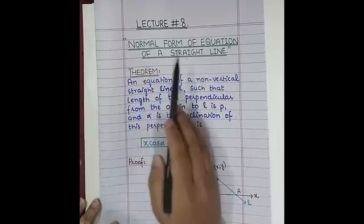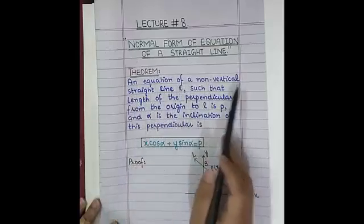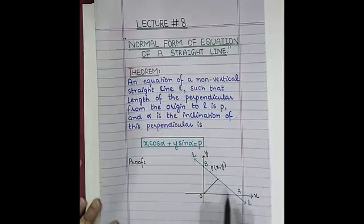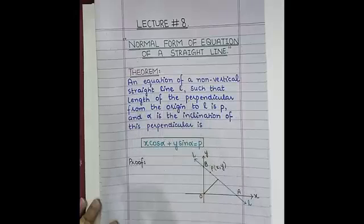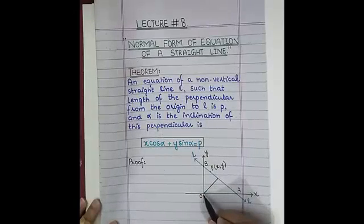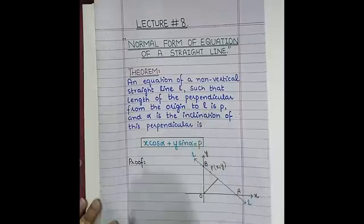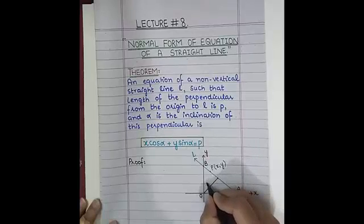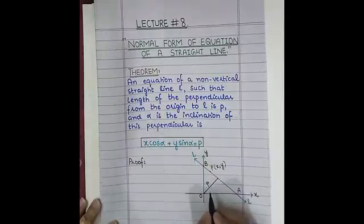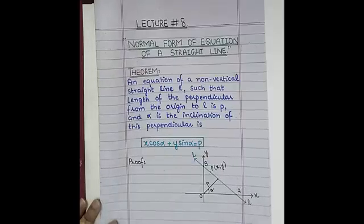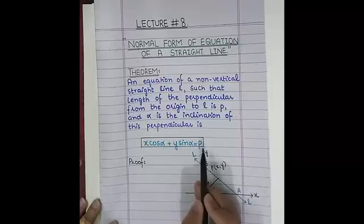The normal form of the equation of a straight line: the theorem states that for a non-vertical straight line L, where P is the length of the perpendicular from the origin to the line and alpha is the angle of inclination of that perpendicular, the equation is x cos alpha plus y sin alpha equals P.